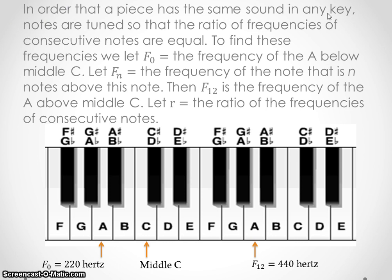All right, in order so that a piece has the same sound in any key, notes are tuned so that the ratio of the frequencies of consecutive notes are equal. What that means is the jump from A to A-sharp is the same as A-sharp to B, which is the same as B to C, which is the same as C to C-sharp, etc. But at any rate, the frequencies between the jumps and the notes are all going to be the same here.